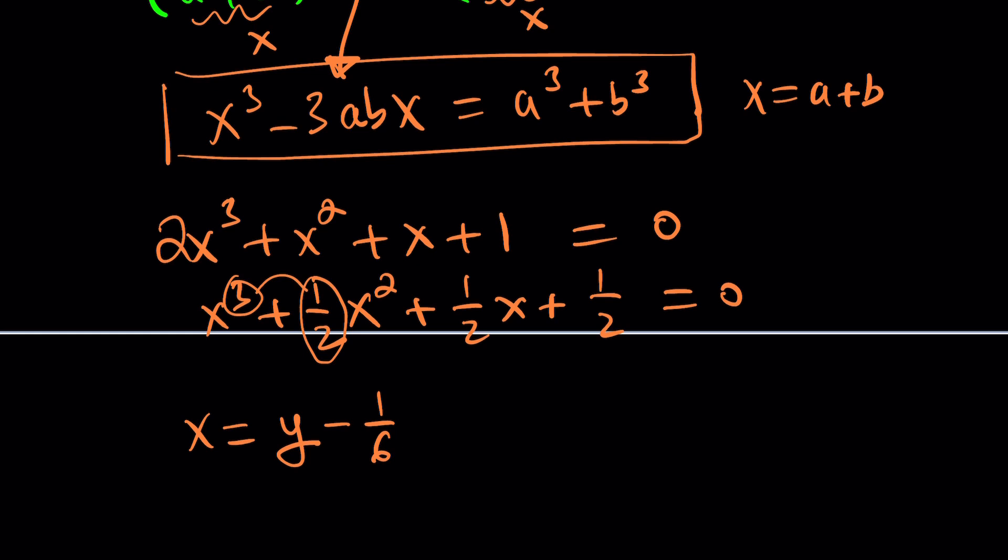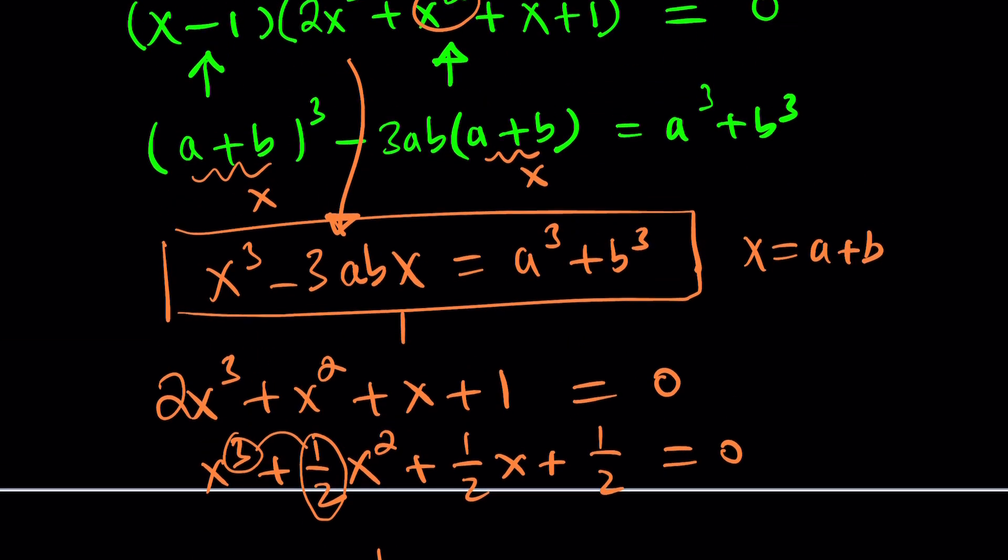So if you replace x with y minus 1 over 6, that will eliminate the quadratic term. You're going to have only y cubed. Of course, x will be gone. But you'll have y cubed and y and a constant. And then you can go ahead and just make it look like this and solve the equation from there. But I have another idea.